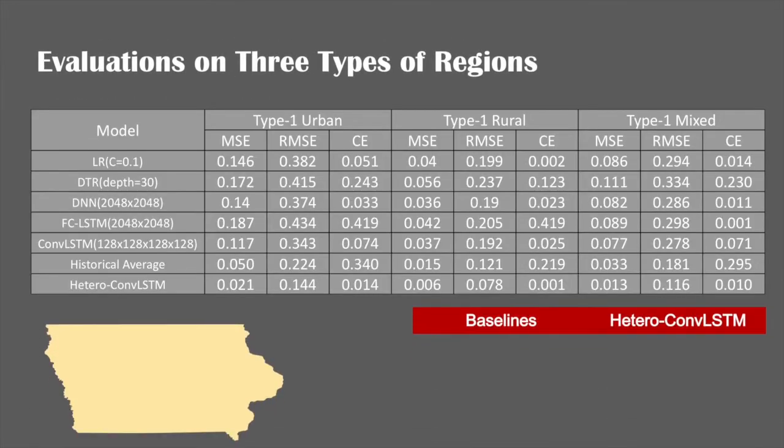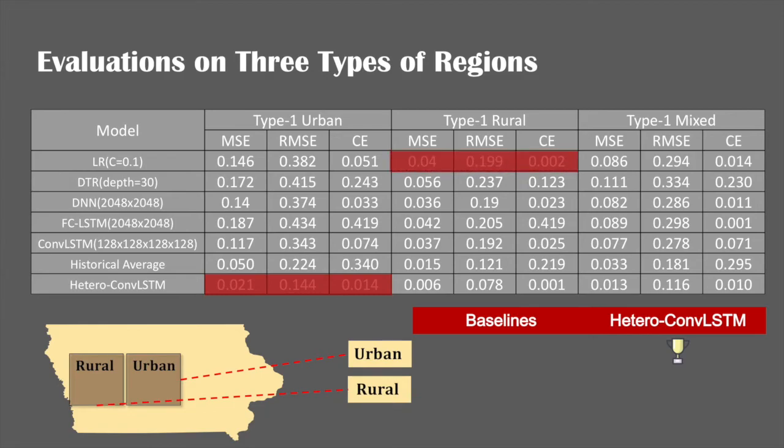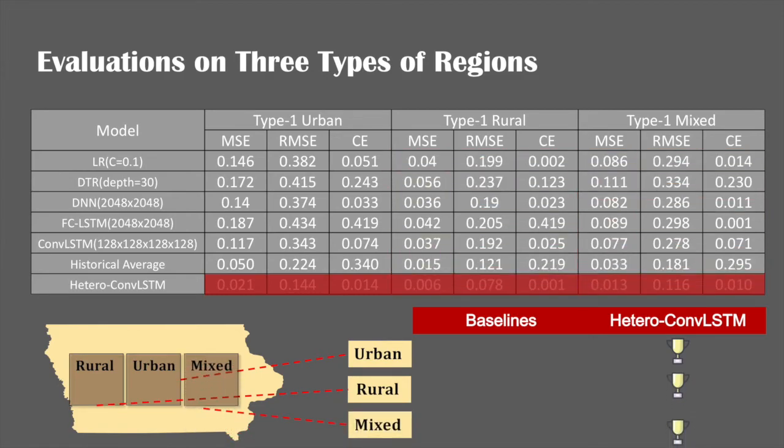We present the result in three different types of regions in our experiments. The convolutional LSTM model achieves the best performance with the lowest mean square error and the root mean square error in all three regions.